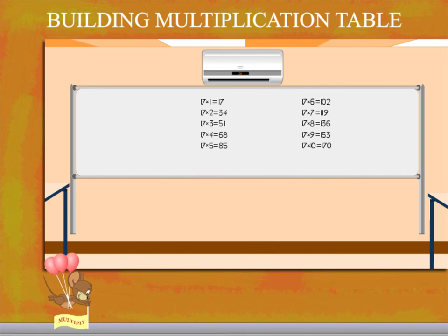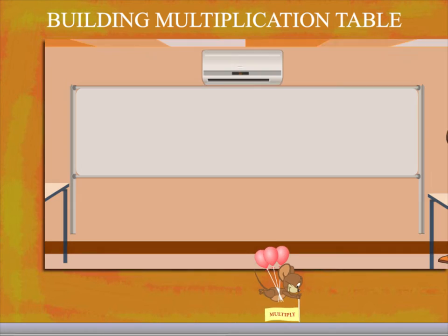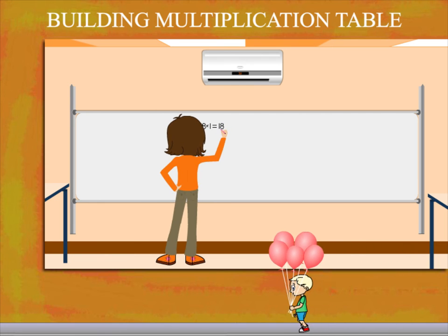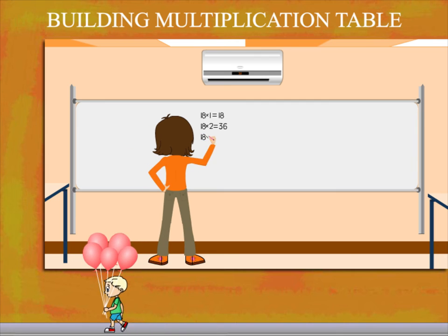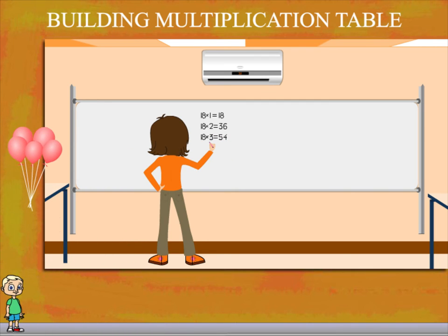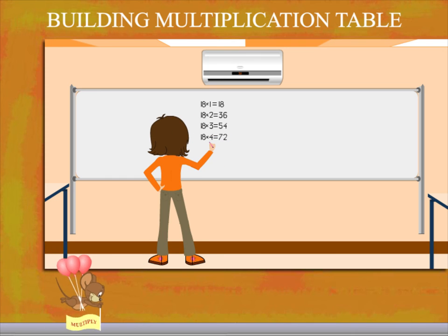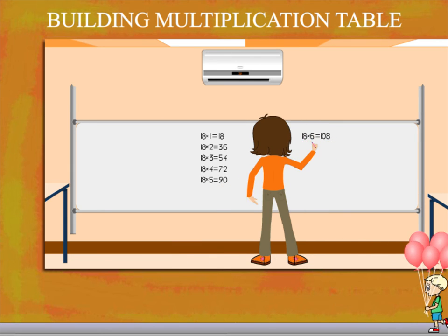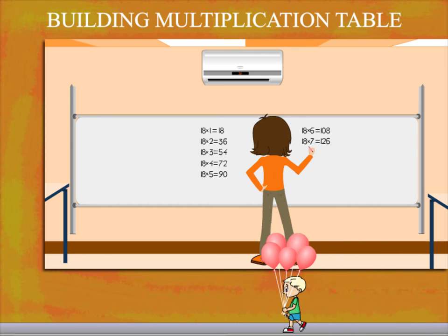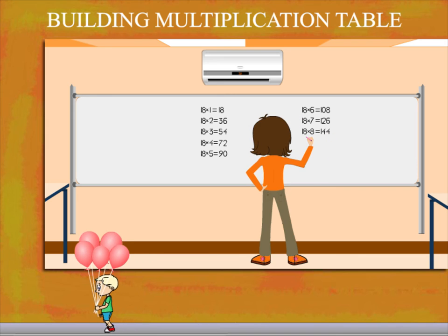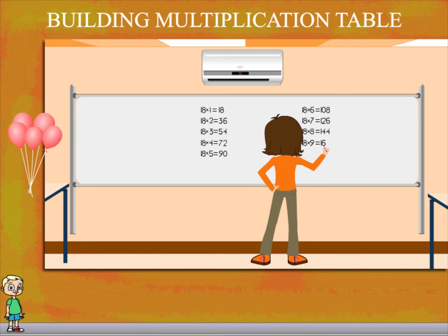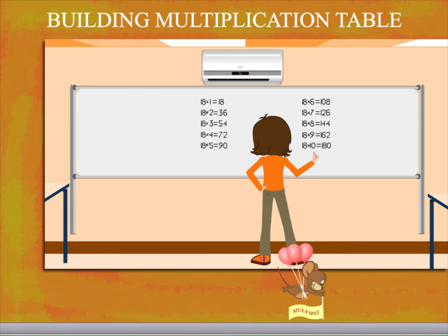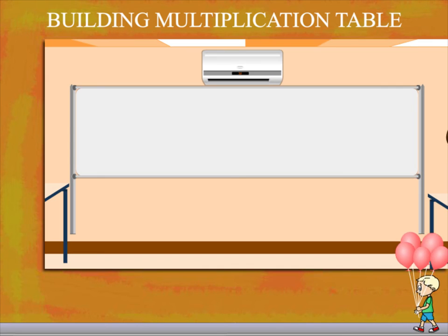Okay Bubly, what about 18? 18 1s are 18, 18 2s are 36, 18 3s are 54, 18 4s are 72, 18 5s are 90, 18 6s are 108, 18 7s are 126, 18 8s are 144, 18 9s are 162, 18 10s are 180. Oh wow!